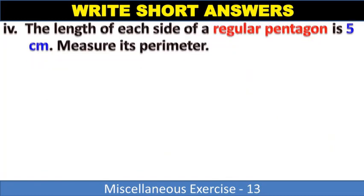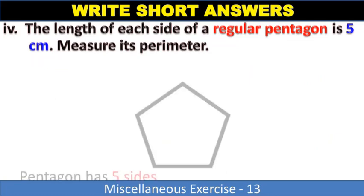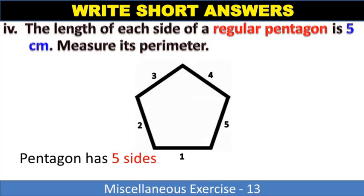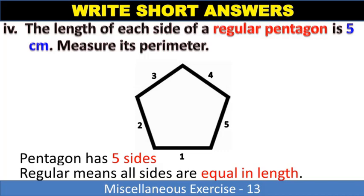Last question: The length of each side of a regular pentagon is five centimeters. Find its perimeter. This is just like question two. Pentagon has five sides, and regular pentagon means all sides are equal. So if one side is 5 cm, the perimeter of five sides is 5 × 5 = 25 centimeters.